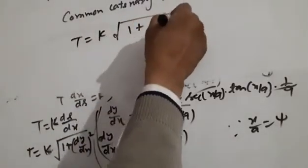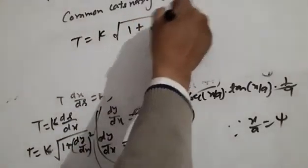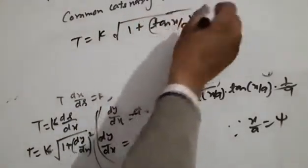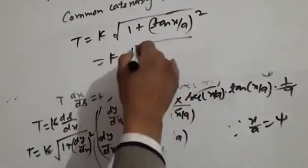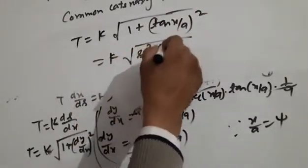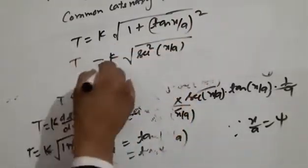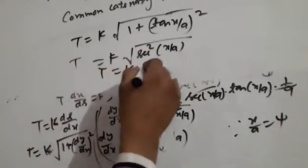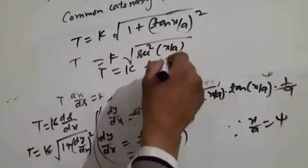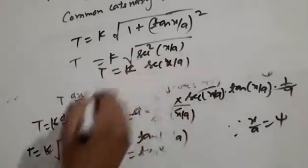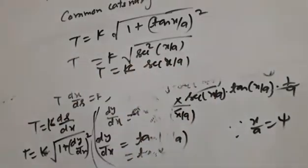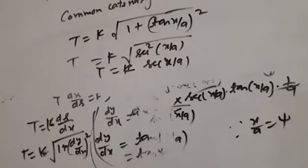Since 1 plus tan²(x/a) equals sec²(x/a), we get k times sqrt(sec²(x/a)), so t is equal to k·sec(x/a).